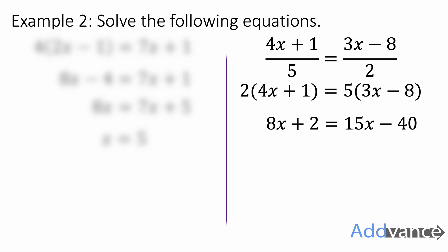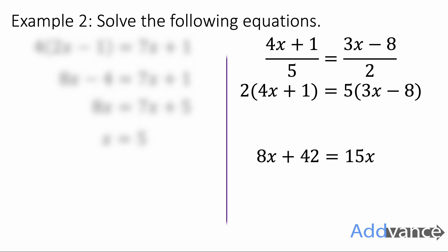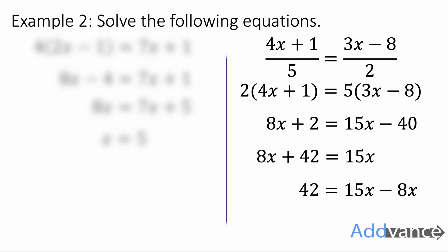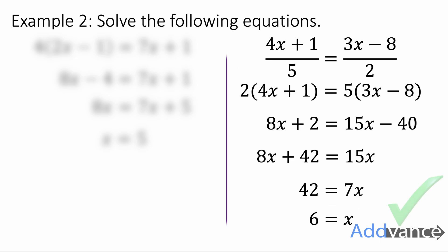We then expand the brackets, move the minus 40 to the other side, and move the 8x to the other side by making it negative. We get 42 equals 15x minus 8x, which is just 7x. 42 equals 7x, so we divide by 7 and we get x equals 6 as the final answer.